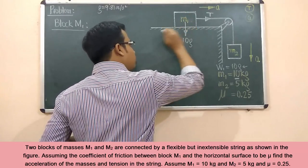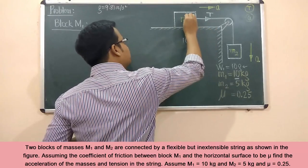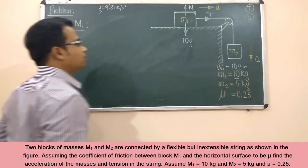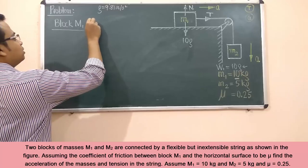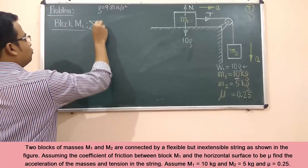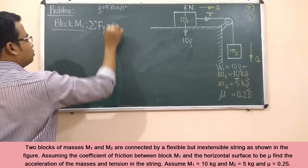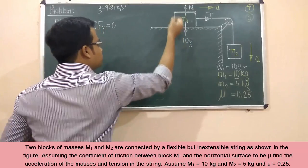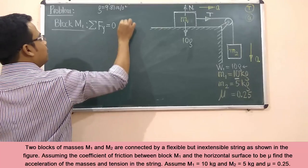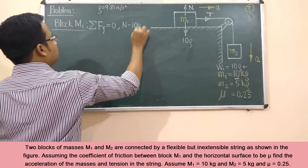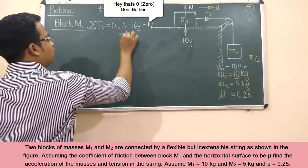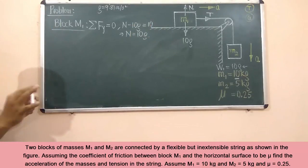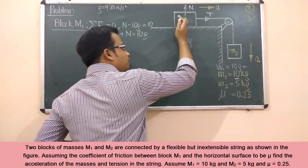There is a normal reaction N offered from the surface, perpendicular to the block. Since there is no movement along the y-direction, summation of all forces in the y-direction equals zero: N minus 10g = 0, so the value of the normal reaction N = 10g.